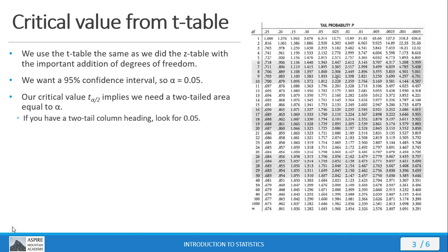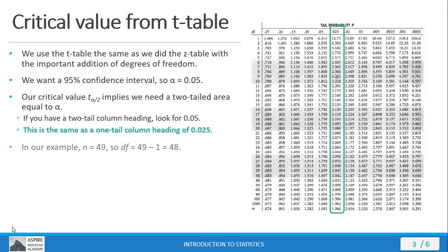If we had a two-tailed column heading we'd be looking for 0.05. But we have a one-tailed column heading, so that's half of alpha which is 0.025. I look for 0.025. There's the column for 0.025. Now I need to figure out which row I'm going to be using. In our example we've got a sample size of 49, so we have 48 degrees of freedom. If you go down the list, 48 is not actually listed.